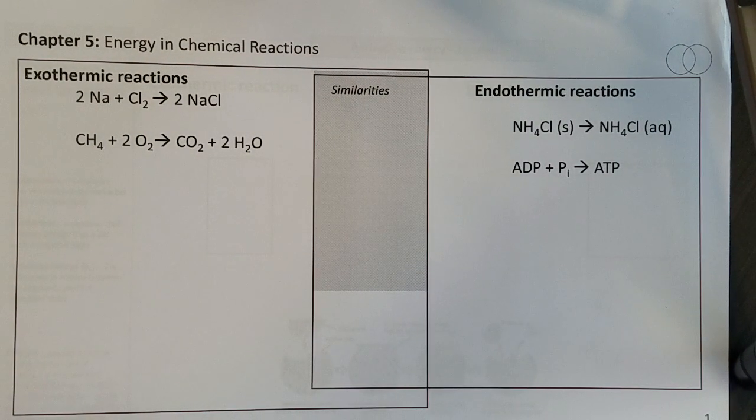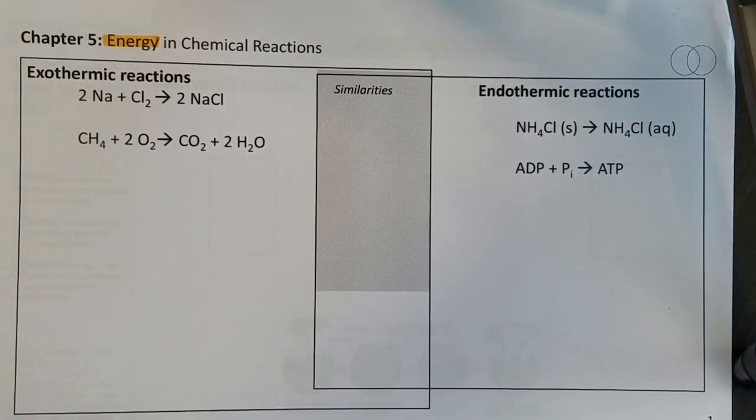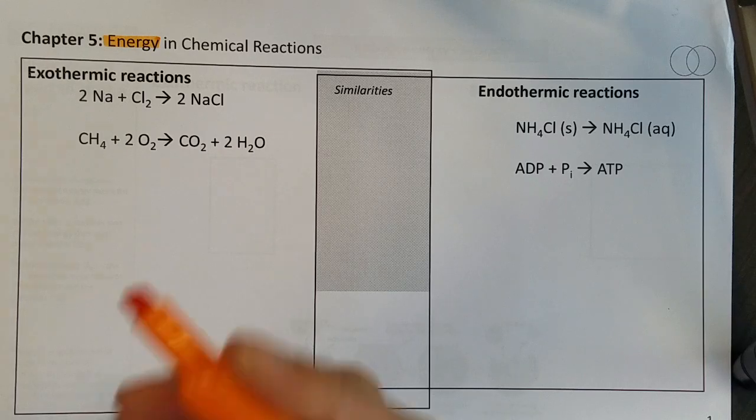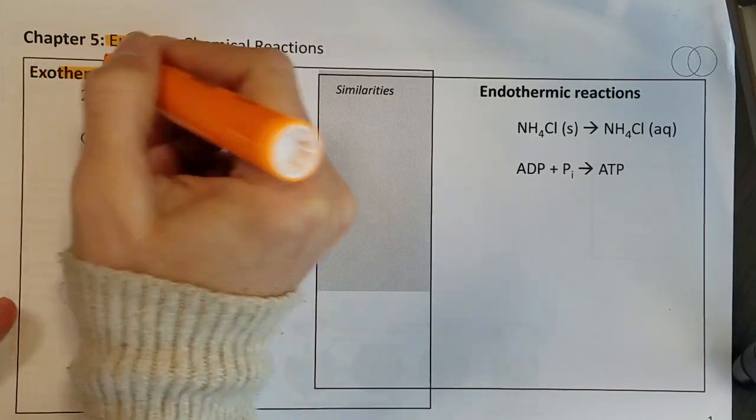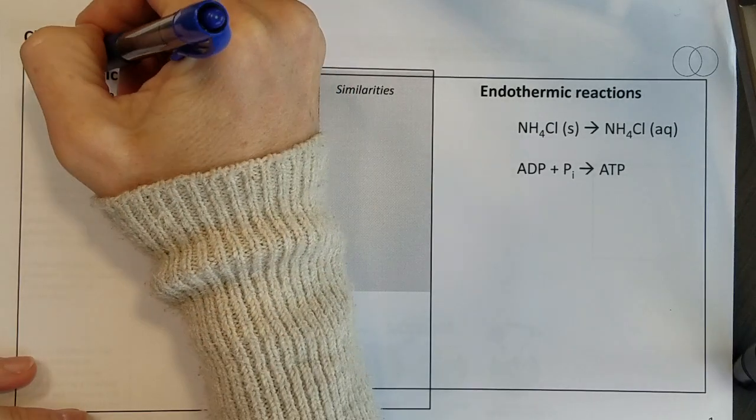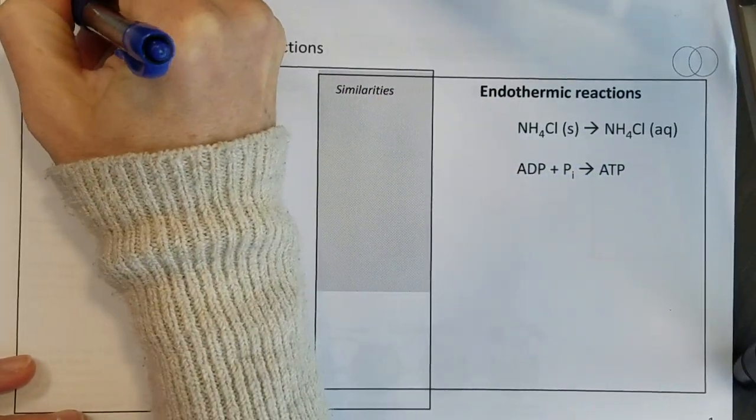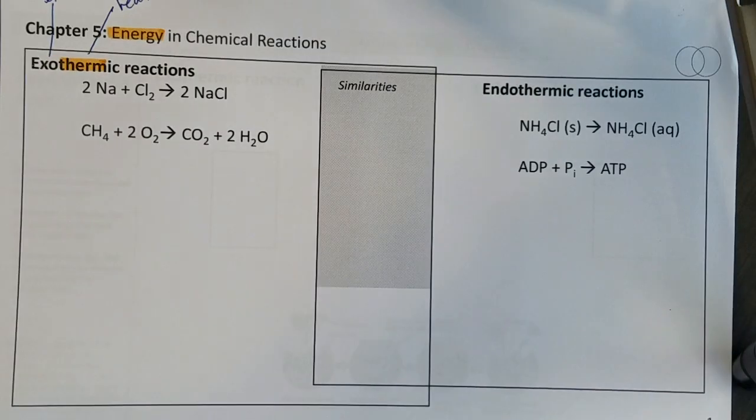On this slide we're going to be looking at energy in chemical reactions and we're going to start with exothermic reactions. Therm is a root that's suggesting heat, and exo is a prefix that's telling us that heat is exiting.